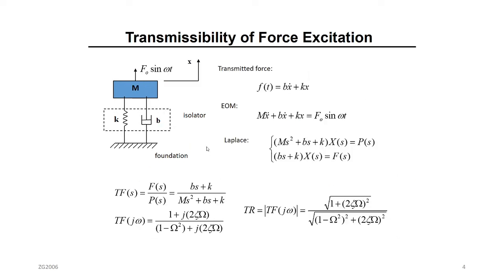Let's focus on this example. This is my simple model: this is my machine, a mass with an unbalanced force — this is my forcing function. This is the floor, and this is the isolator I want to design — it's a spring and damper. To design this, we need to get the transmissibility, the transfer function. First, you need to get the equation of motion, and then you derive the transfer function where the input is the forcing function and the output is the force going to the floor. How much force goes to the floor? It's going to be Bẋ plus Kx.